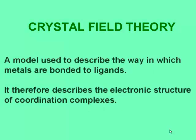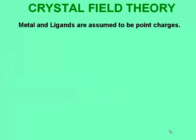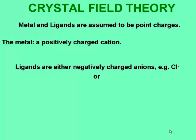Crystal field theory is a model used to describe the way in which metals are bonded to ligands. It therefore describes the electronic structure of coordination complexes. In crystal field theory, the metal and ligands are considered to be point charges. The metal is a positively charged cation, and the ligands are either negatively charged anions or neutral molecules with a negative pole at one end.